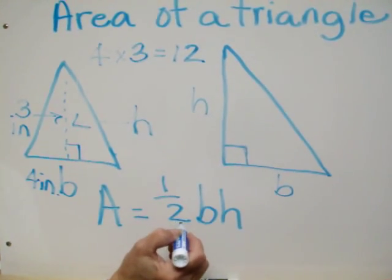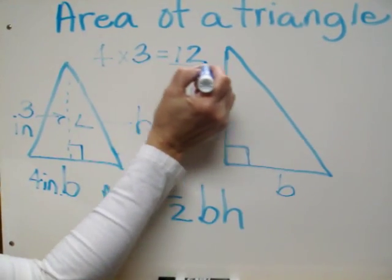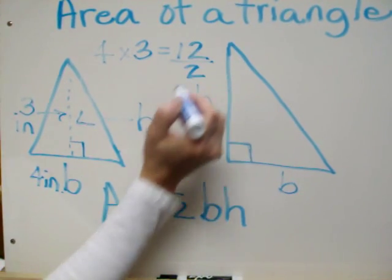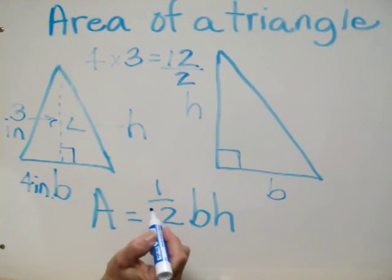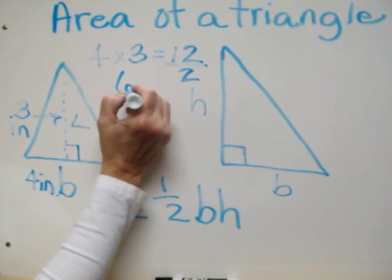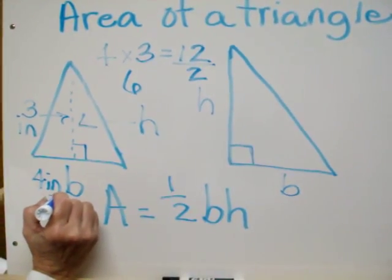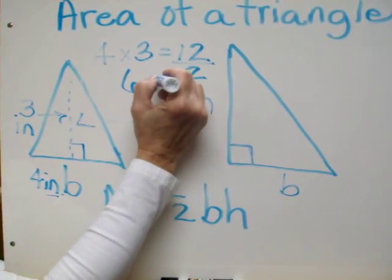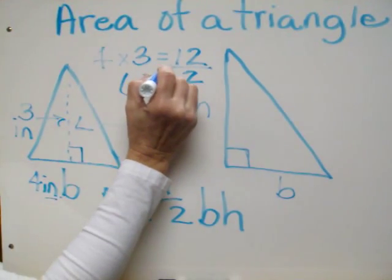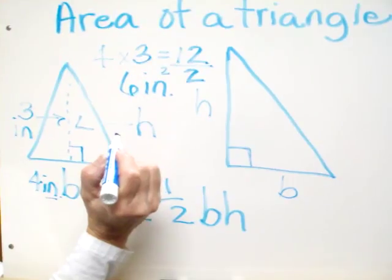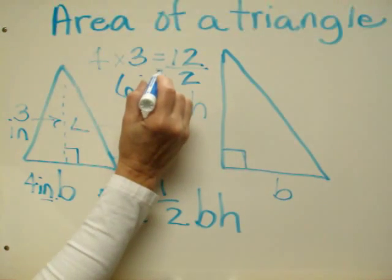Now we have to take half of twelve. Half of twelve is like a fraction, twelve over two. To divide twelve by two we would get an answer of six. Inches is our measurement. We have to label it inches and because we're talking about area we're going to put an exponent of two. We read that answer as six inches squared.